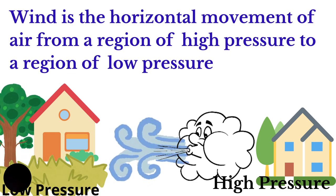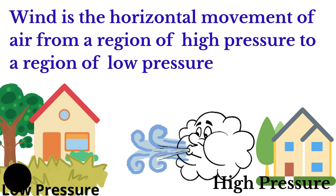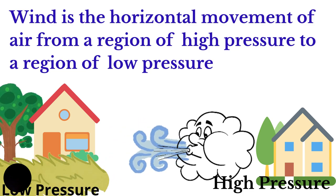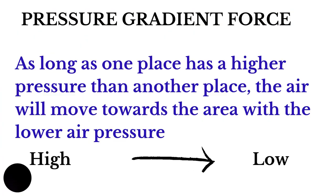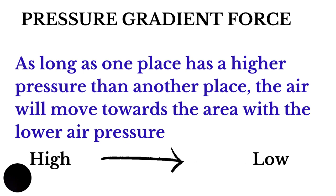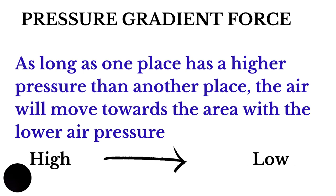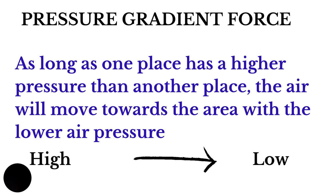Wind is the horizontal movement of air from a region of high atmospheric pressure to a region of low atmospheric pressure. So as long as one place has a higher pressure than another place, air will begin to move horizontally, from the area where the pressure is higher to the area where the pressure is lower.